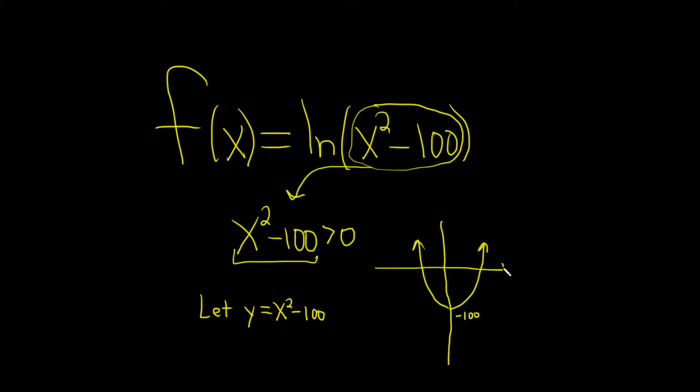And it crosses the x-axis at 10, because 10 squared is 100, 100 minus 100 is 0, and negative 10. Plug in 10, you get 0. Plug in negative 10, you get 0.